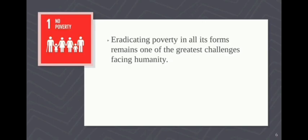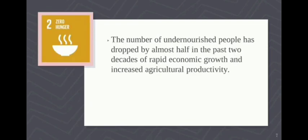SDG 1 is No Poverty. Eradicating poverty in all its forms remains one of the greatest challenges facing humanity, involving targeting the most vulnerable, increasing basic resources and services, and supporting communities affected by conflict and climate-related disasters. SDG 2 is Zero Hunger. The number of undernourished people has dropped by almost half in the past two decades through rapid economic growth and increased agricultural productivity. This goal promotes sustainable agriculture, supports small-scale farmers, and requires international cooperation to invest in infrastructure and technology.